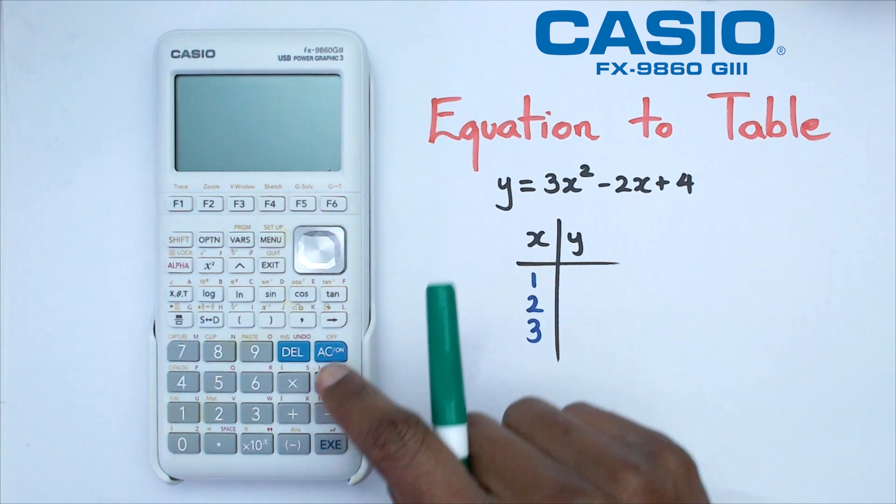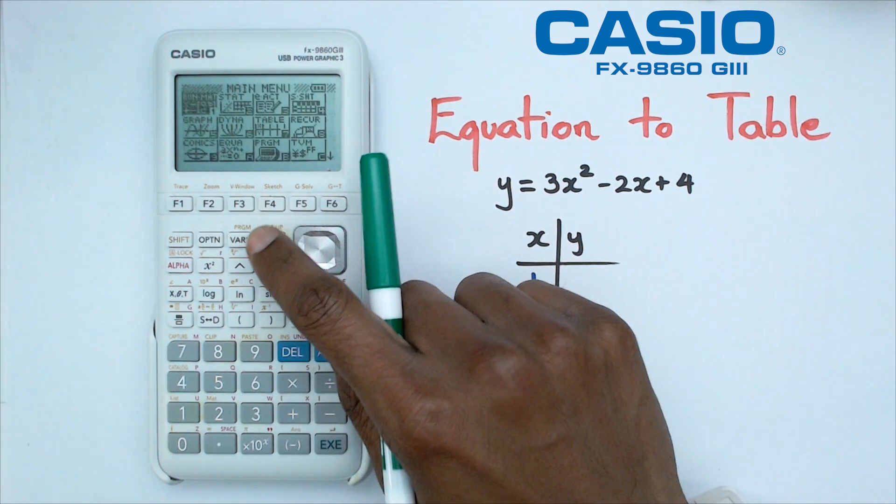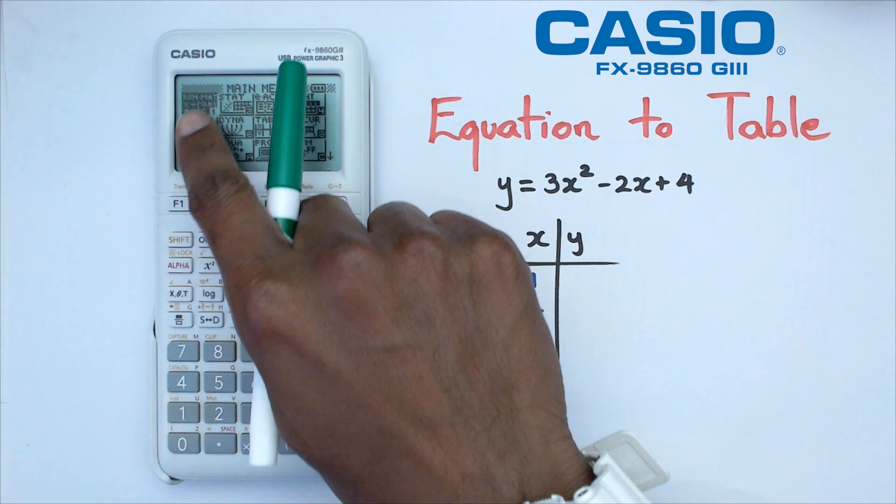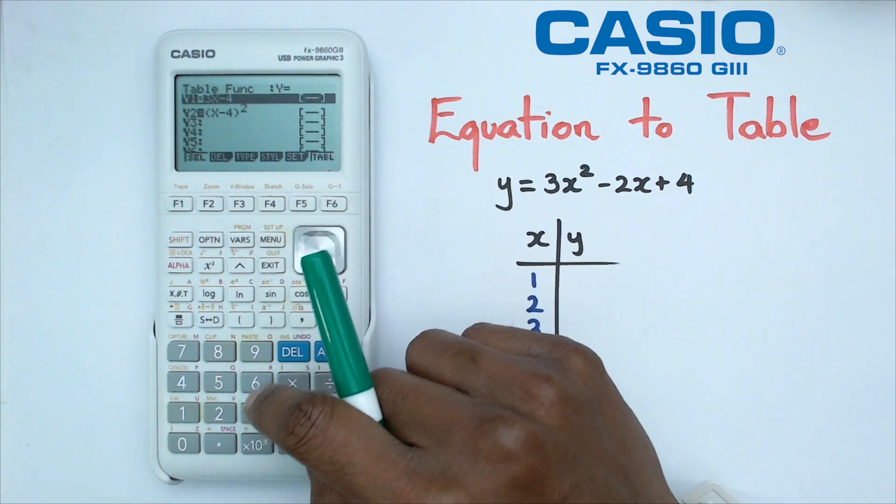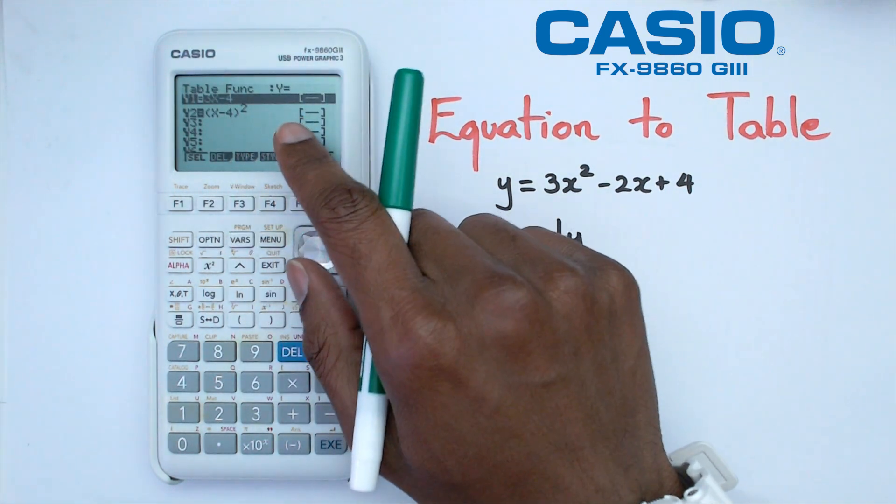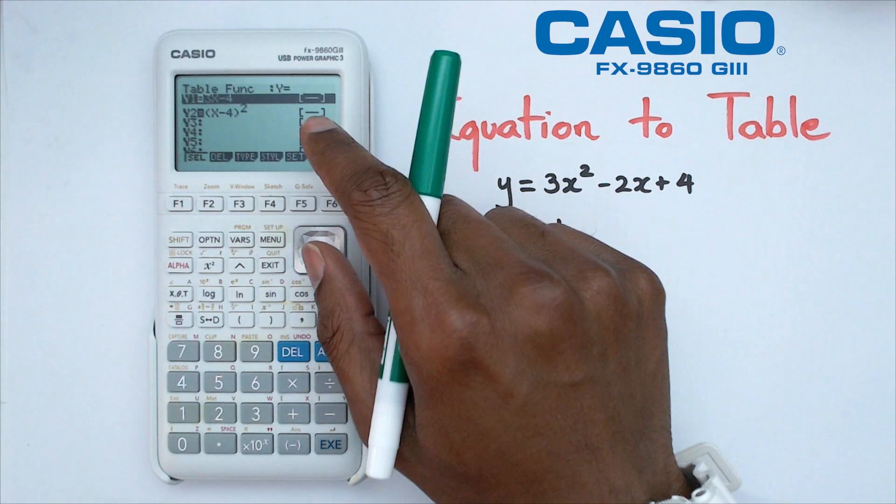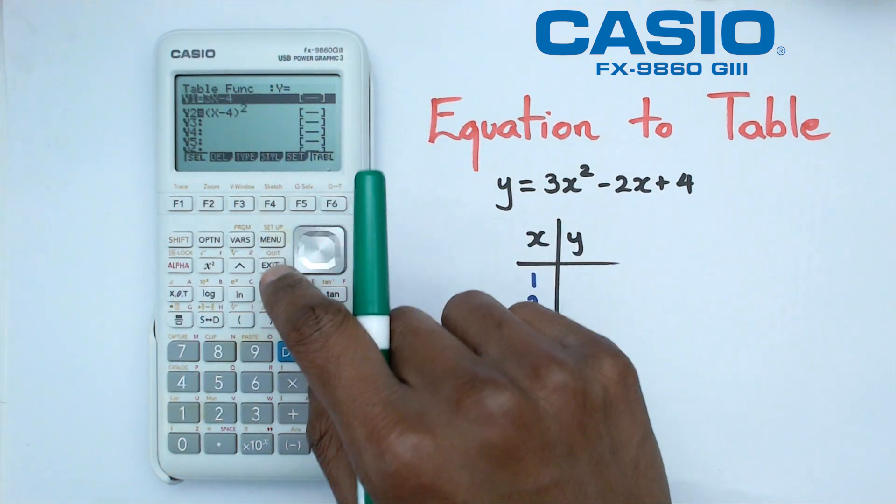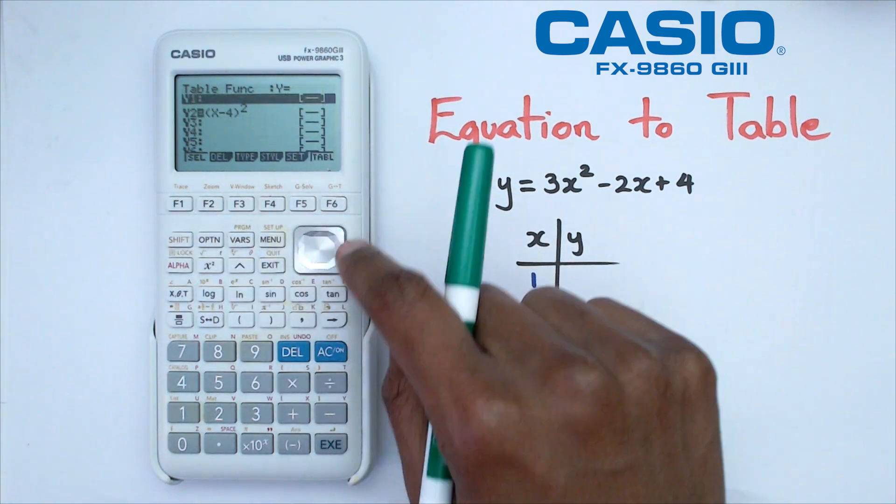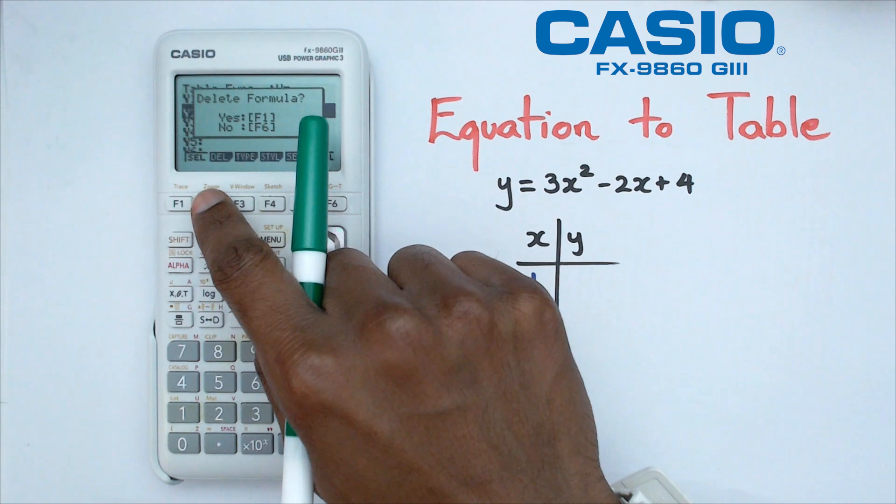The first thing we're going to do is switch on the calculator, go into menu, and make our way towards table. When you get there it'll look very similar to what the graph function looks like. In this case we're going to delete these formulas first, so click on delete and click on F1 for yes.